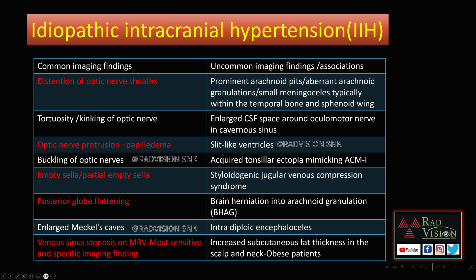To summarize the imaging findings in IIH: common findings include distension of the optic nerve sheaths, tortuosity or kinking of the optic nerves, optic nerve head protrusion (papilledema), buckling of the optic nerve, empty sella or partial empty sella, posterior globe flattening, enlarged Meckel's caves, and venous sinus stenosis on MRV (the most sensitive and specific imaging finding). Uncommon findings include prominent arachnoid pits or aberrant arachnoid granulations — small meningoceles typically within the temporal bone and sphenoid wing — enlarged CSF space around the oculomotor nerve in the cavernous sinus, slit-like ventricles, acquired tonsillar ectopia mimicking Chiari I malformation, BHAG, intradiploic encephaloceles, and increased subcutaneous fat thickness in the scalp and neck. IIH is more common in young obese women.